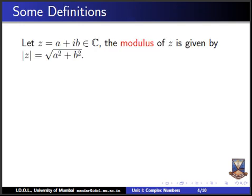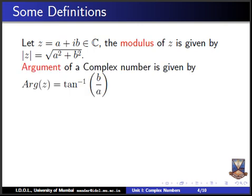Let us go to some definitions. The first is the modulus of a complex number. If Z = a + ib, then the modulus is mod Z = √(a² + b²), written with two vertical lines around Z. The argument of Z, Arg(Z), is given by tan⁻¹(b/a) — that is, tan inverse of the imaginary part upon the real part.